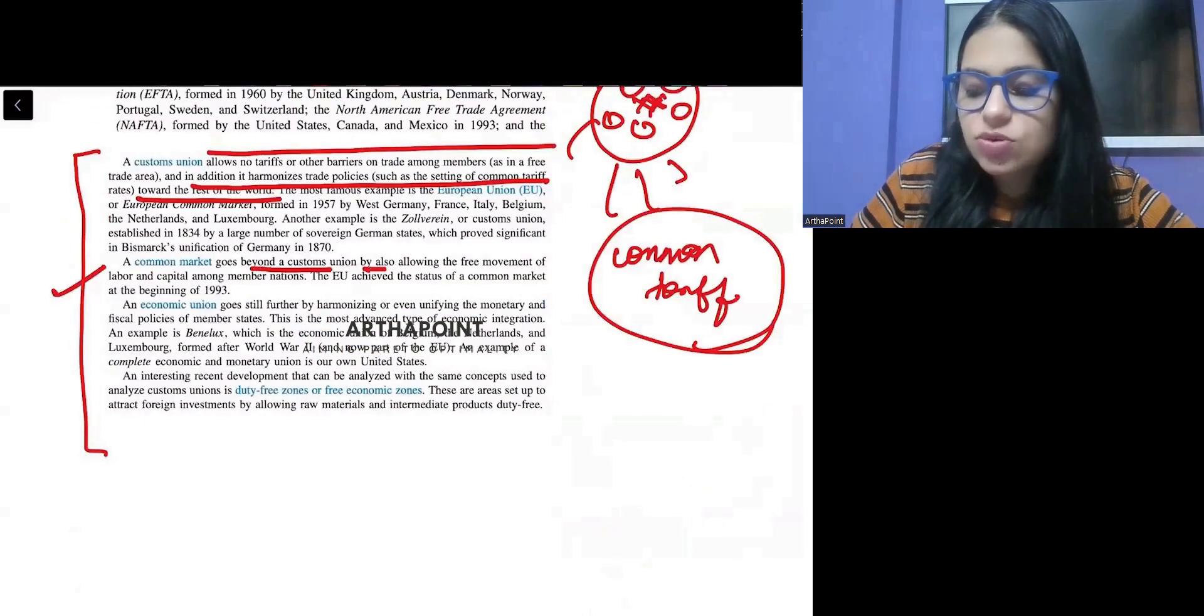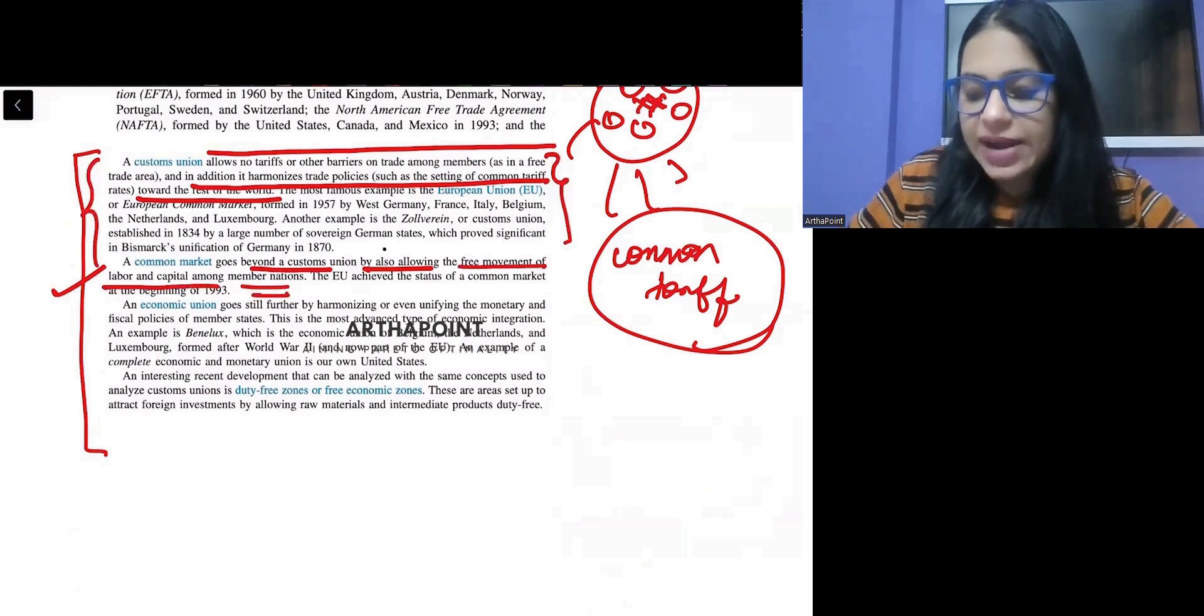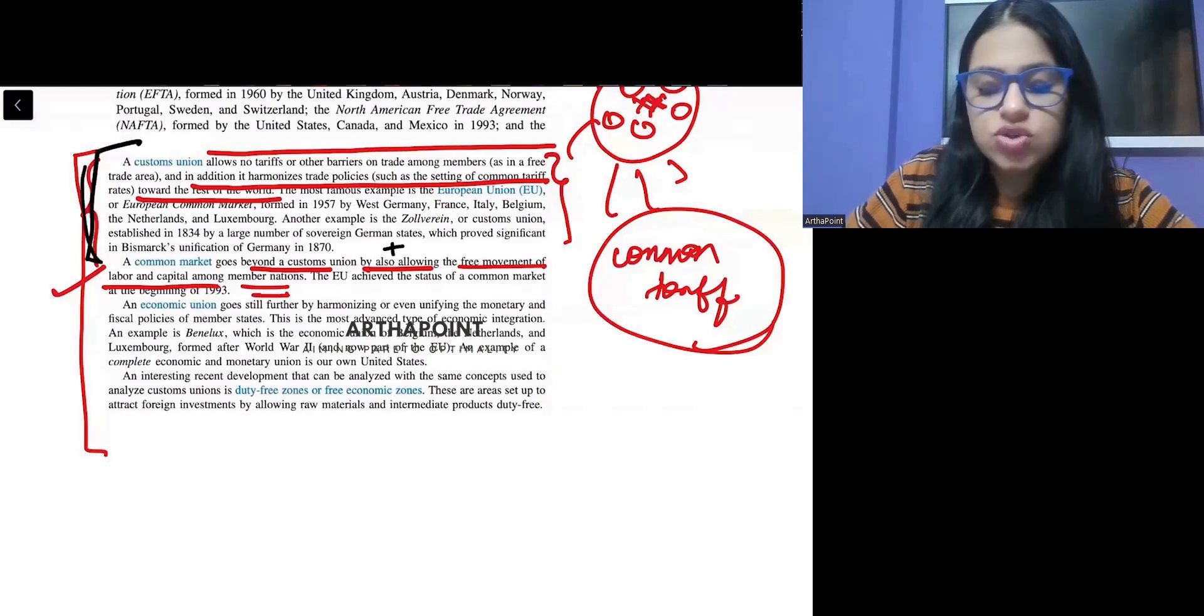But if you just read the definition of common market, it says it goes beyond custom union by also allowing - it is doing this, but it is also allowing the free movement of labor and capital among the nations. So this is in addition to what the custom union is doing.